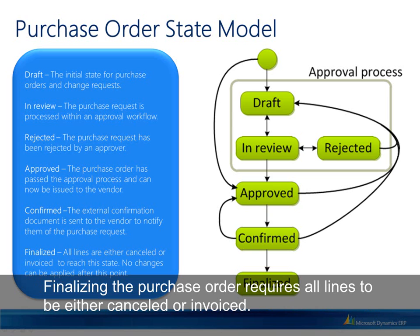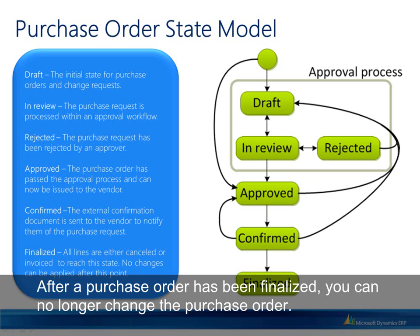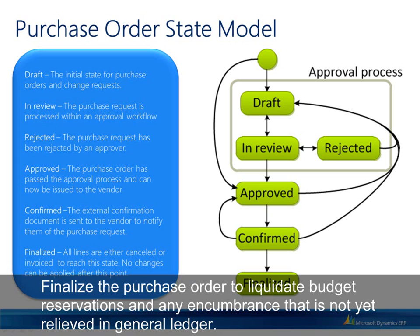Finalizing the purchase order requires all lines to be either cancelled or invoiced. After a purchase order has been finalized, you can no longer change it. Finalize the purchase order to liquidate budget reservations and any encumbrance that has not yet been relieved in the general ledger.